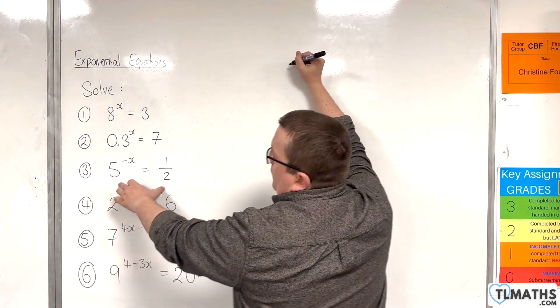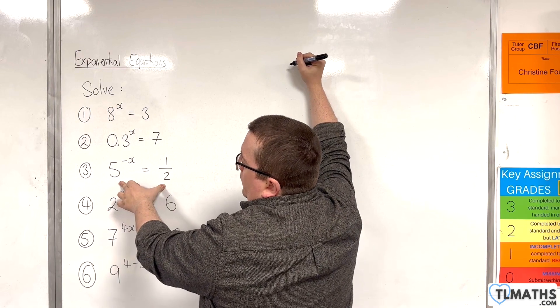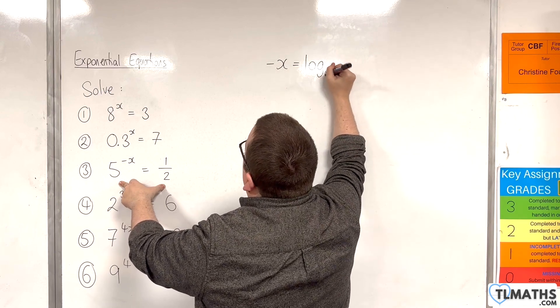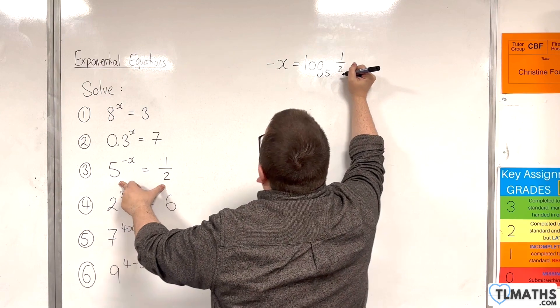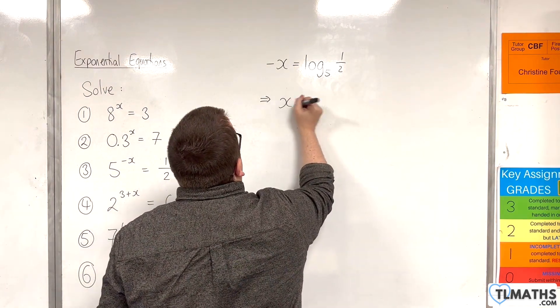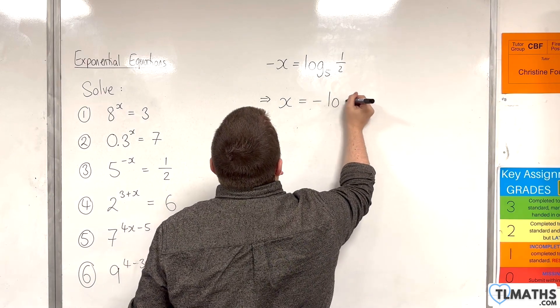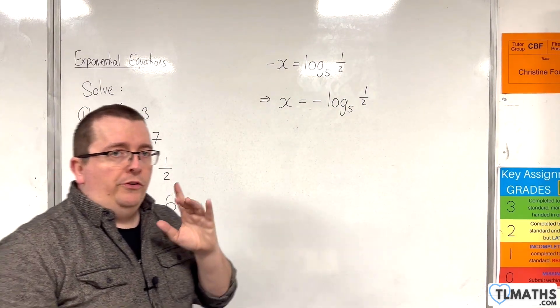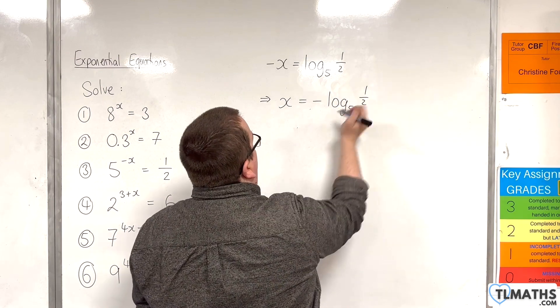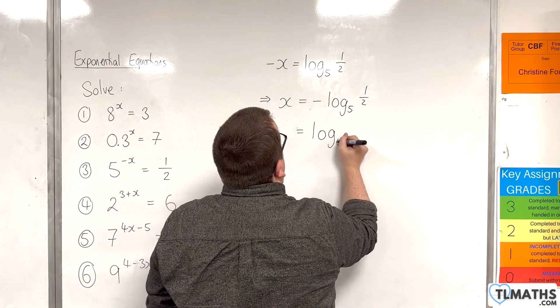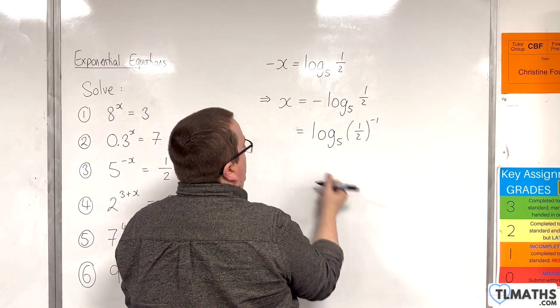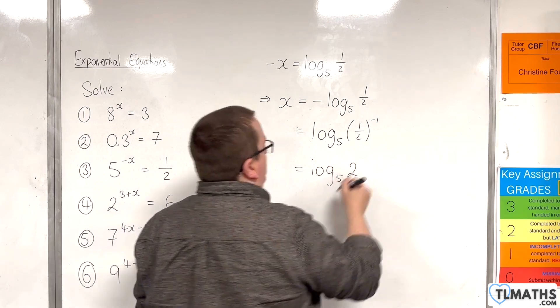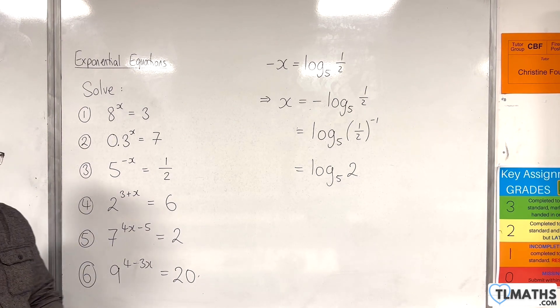For number 3, we have 5 to the power of minus x is equal to 1 half. This is currently in exponential form, so write it in logarithmic form. Minus x is going to be log base 5 of 1 half. What we can then do is multiply both sides by minus 1 and write that as x is equal to minus log base 5 of 1 half. Now, this is a good example to spot that that minus sign can come up to the power. We can write that as log base 5 of 1 half to the minus 1. And, of course, 1 half to the minus 1 is 2, so this is log base 5 of 2.